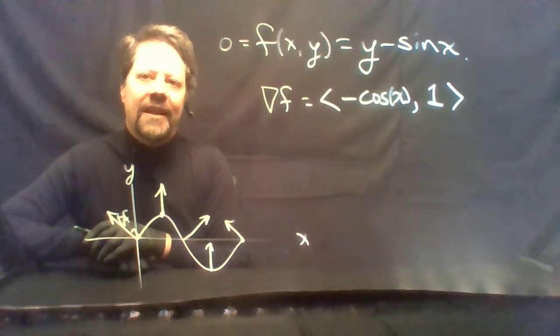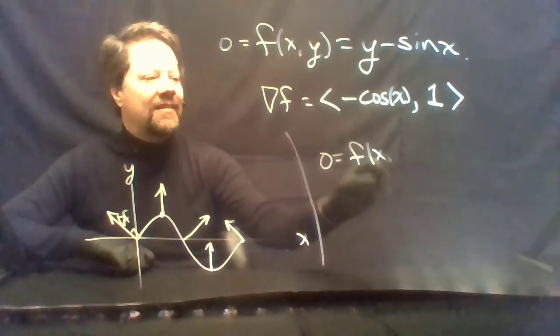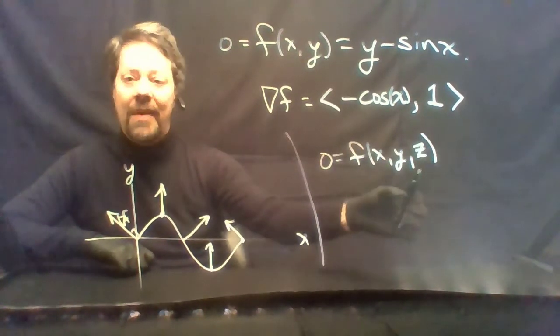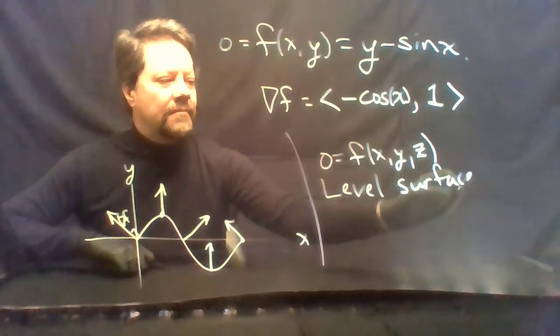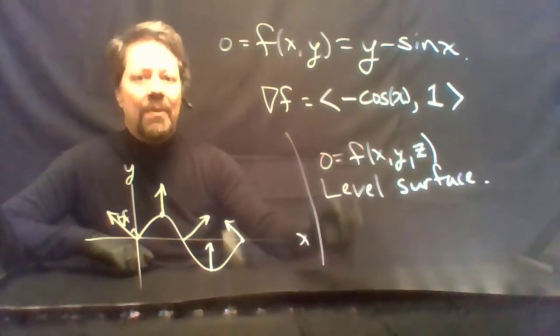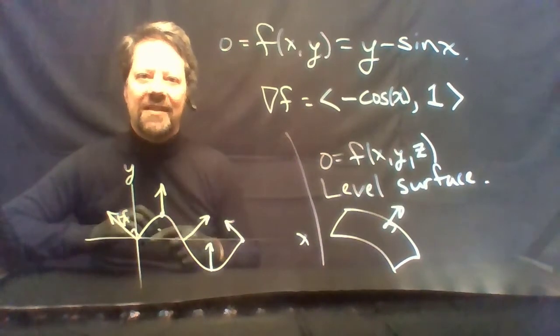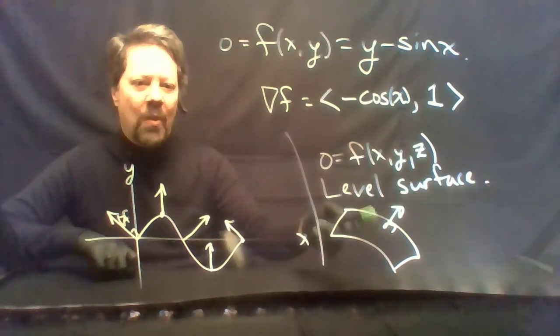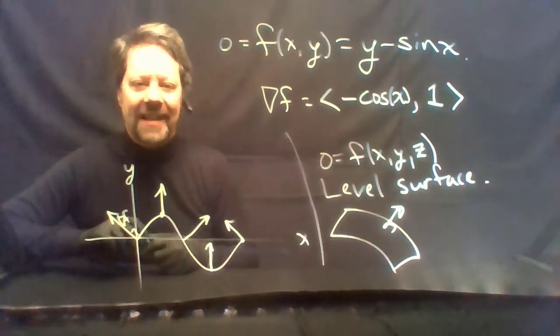In a higher-dimensional setting, if you have a level surface, the gradient will still be normal — but normal to the level surface. So if you have some level surface, the gradient will be normal to that surface. This is sometimes important in calculations involving shockwaves: because shockwaves form these surfaces, you can find a normal to the surface by just taking a gradient. This gradient allows you to easily find normals to various kinds of surfaces and, consequently, it makes it easy to find tangent planes as well.